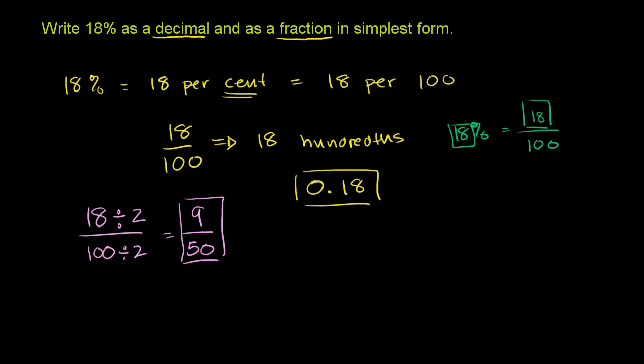And another way to think about it, you could view this as 18.0%. So this is 18.0%. When you want to convert this, I just added a trailing 0 there, just so that you see the decimal. But if you want to express this as a decimal without the percent, you just move the decimal to the left two spaces. So if we move the decimal to the left two spaces, 1, 2, this becomes 0.18.